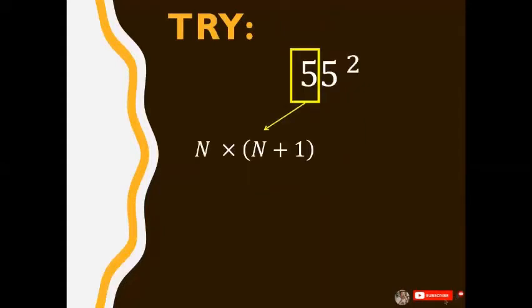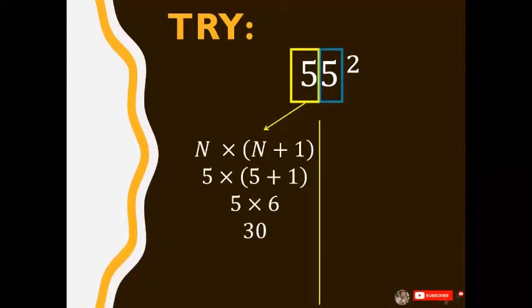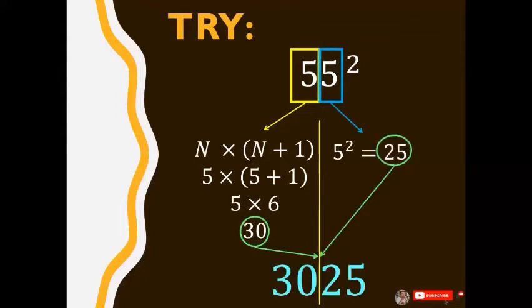Okay, let's try another. 55 squared. We have the formula: 5 times 5 plus 1 is 5 times 6, which is 30. And 5 squared is 25. So it's 3025.